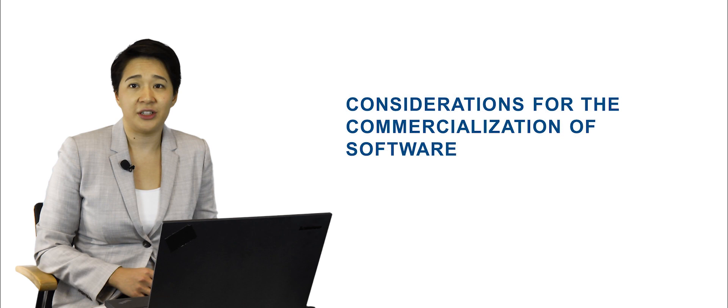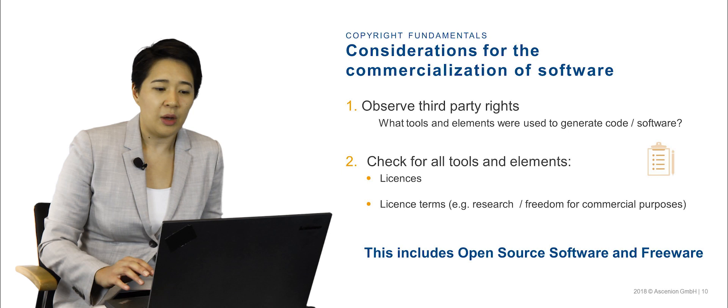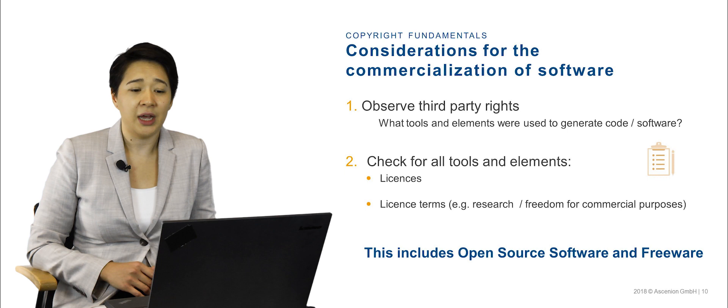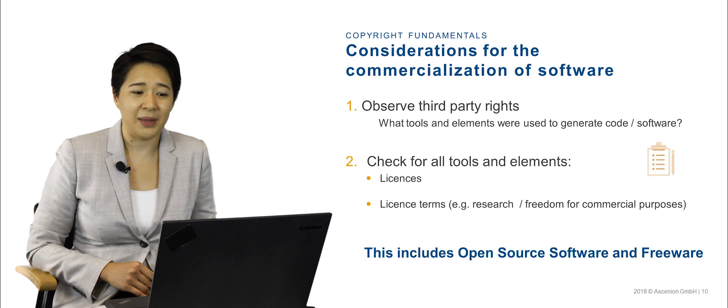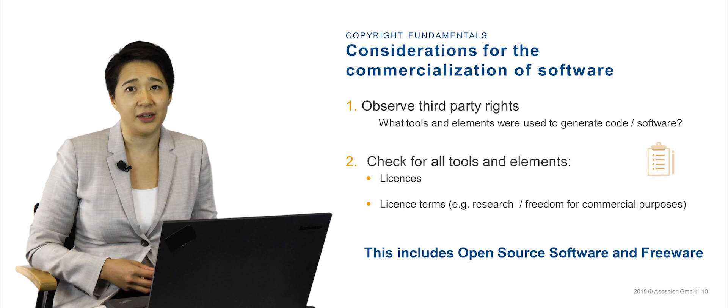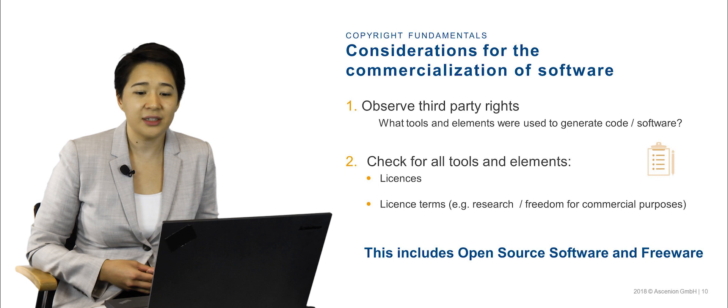Here we're going to talk about some considerations to take into account when commercializing software. Before software can be commercialized, the content and any obligations with respect to intellectual property rights of third parties must be assessed. Researchers can help make this process easier by keeping clear records of any tools or elements used to generate the code or the software from outside sources. For each tool and element from a third party that is used, any licenses and the license terms need to be reviewed.